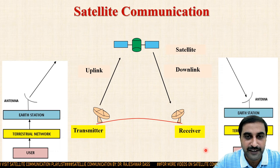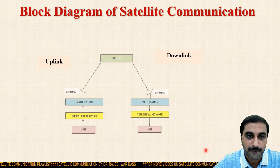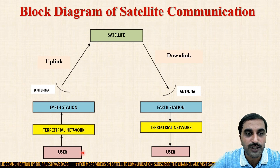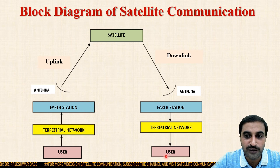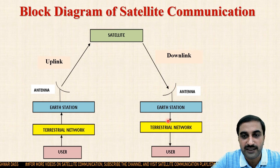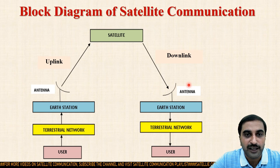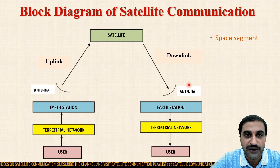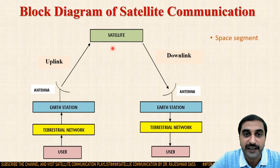If we simplify this diagram, here the user transmits the information through the transmitting earth station and towards the receiver side the user gets the information through the receiving earth station antenna. The overall diagram can be divided into three parts. One is known as the space segment — space segment mein aapka satellite aayega.